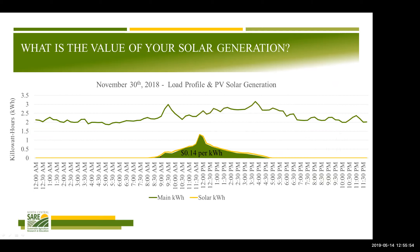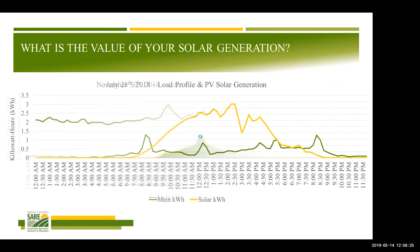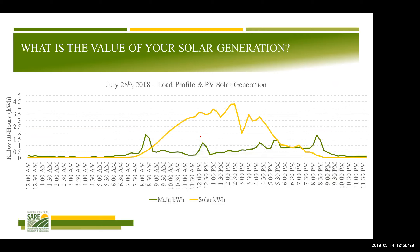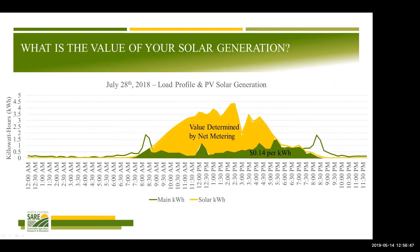In one scenario, the solar was always under the demand — the array generated electricity and it was all used by the farmstead. No electricity went onto the grid; it all got used at that moment in time. If electricity at retail energy charge was $0.14 per kilowatt-hour, all of that electricity would be worth $0.14. On a different day with lower load and higher solar generation, everything the solar provided directly was worth $0.14 per kilowatt-hour, but the portion that went onto the grid — the excess generation — needs its value determined.